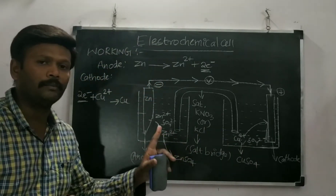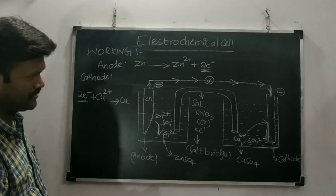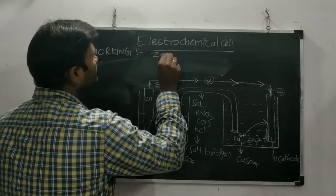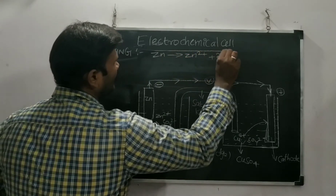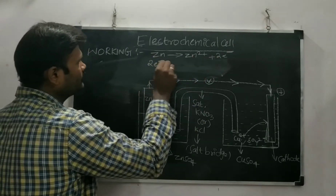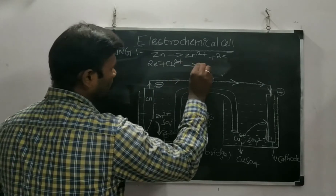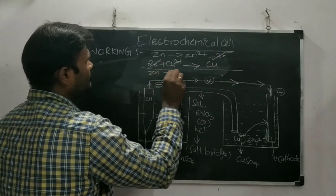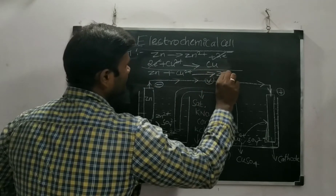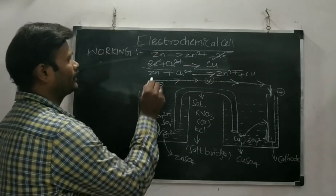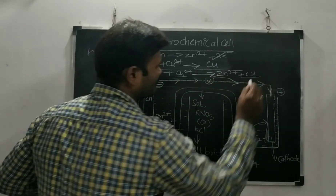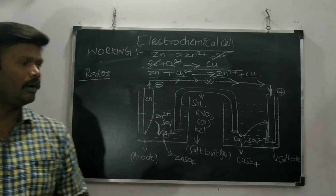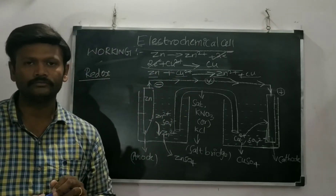Looking at the overall reaction: at the anode, zinc goes into solution as Zn²⁺ with the loss of two electrons. Those two electrons are accepted by Cu²⁺ from the solution, which forms copper as product. Overall: Zn + Cu²⁺ → Zn²⁺ + Cu. The zinc undergoes oxidation and copper undergoes reduction — this reaction is called a redox reaction.